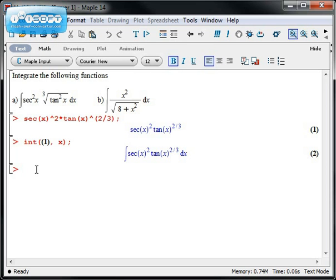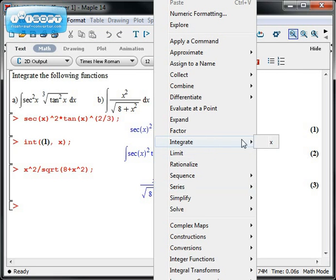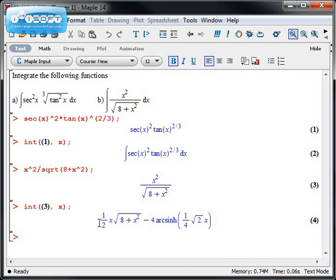On the other hand, if I try the second function, x squared divided by the square root of 8 plus x squared, and right click and integrate this, then Maple actually gives me an answer: 1 half x times the square root of 8 plus x squared minus 4 times the hyperbolic arc sine function, which isn't a function we've used much in this class.